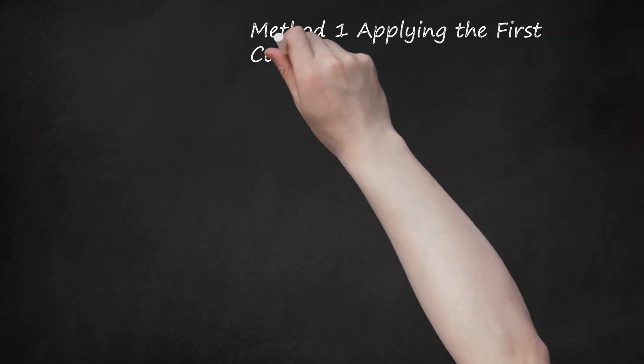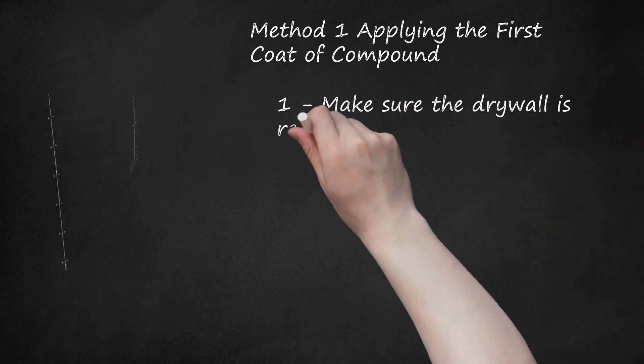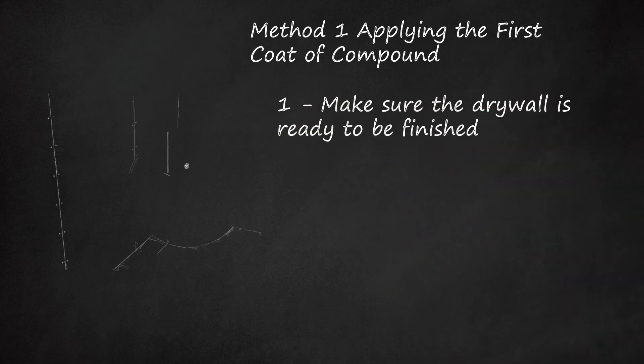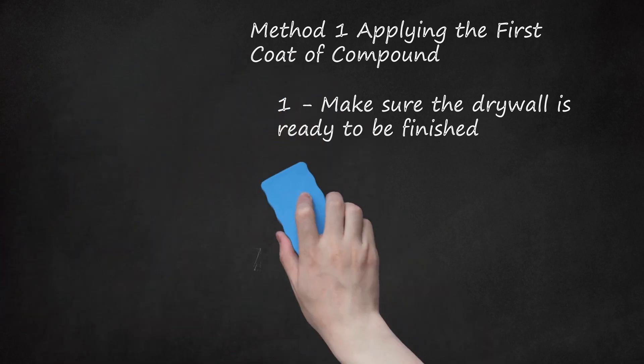Method 1: Applying the First Coat of Compound. Step 1: Make sure the drywall is ready to be finished. After the drywall is installed, you should look for any screws that are sitting proud of the wall. Drive them in until they are recessed just slightly. Remove any bits of the drywall's outer paper layer that are torn or loose. This will keep them from becoming mixed into the joint compound and showing.